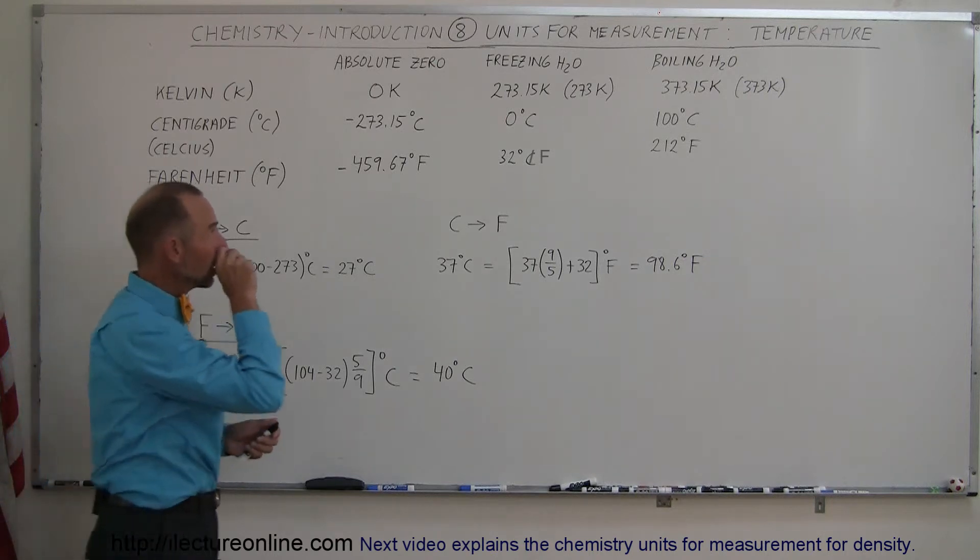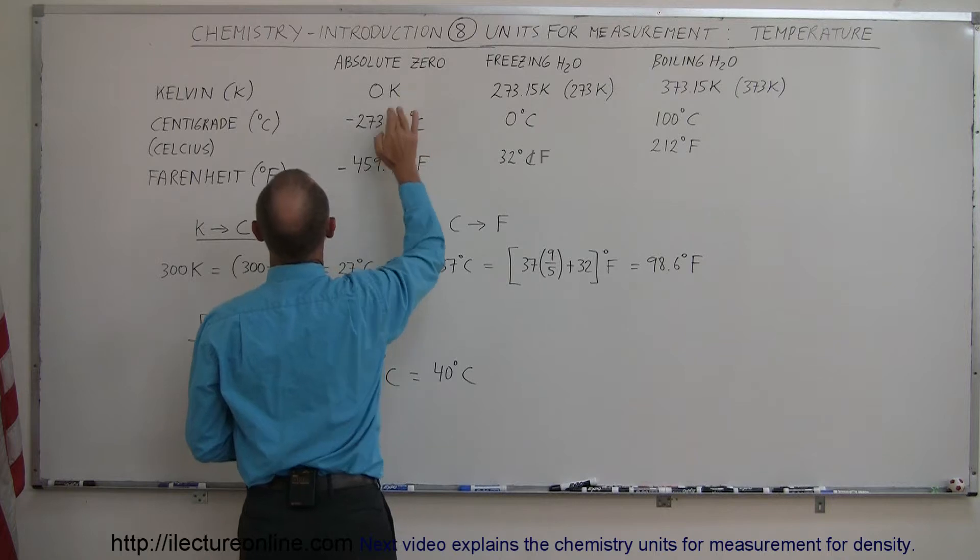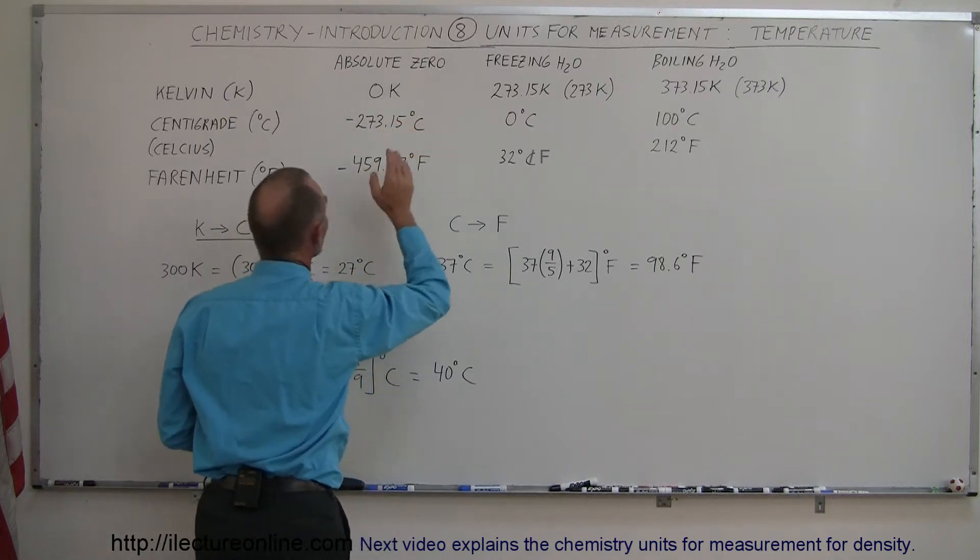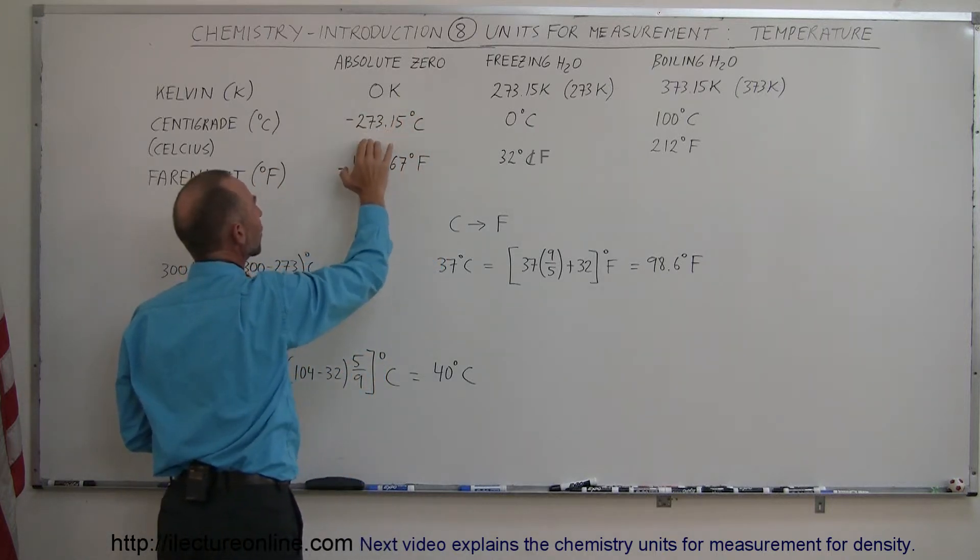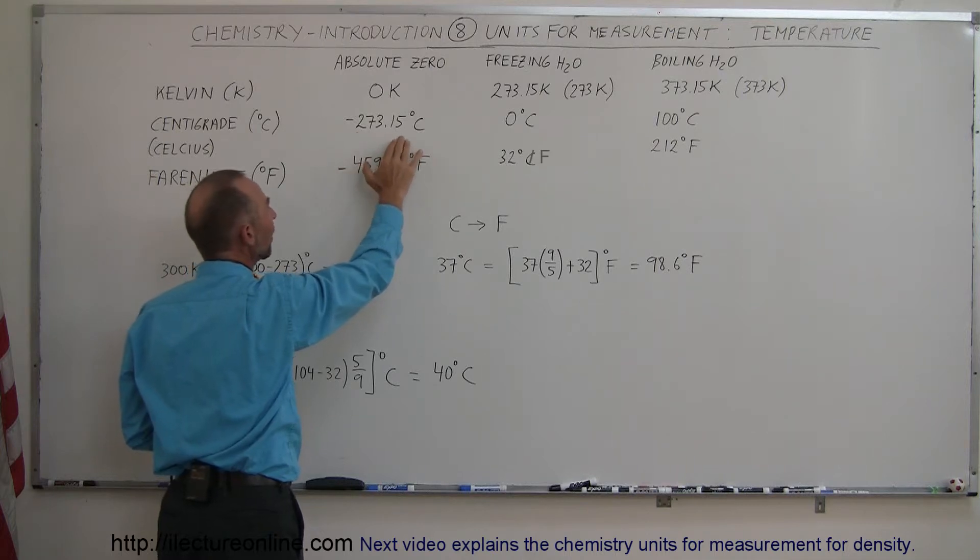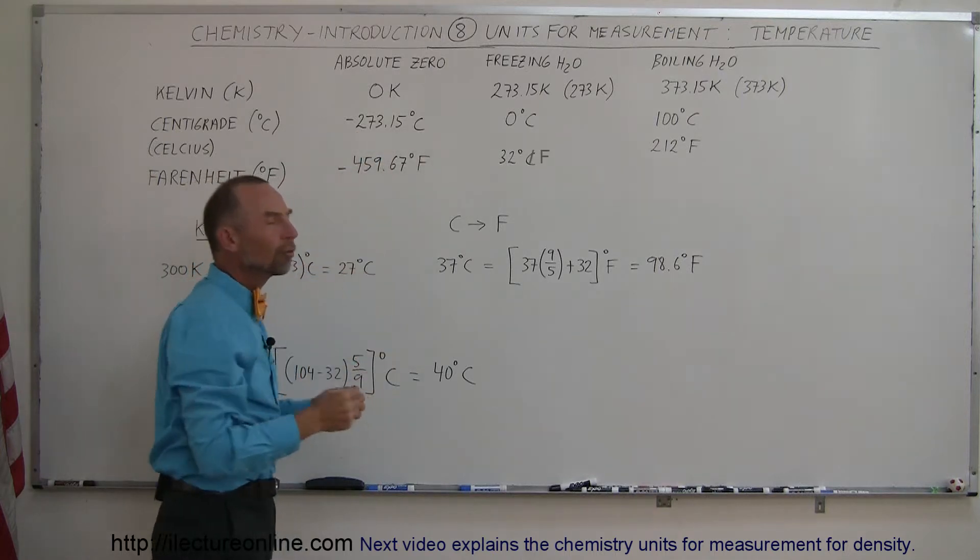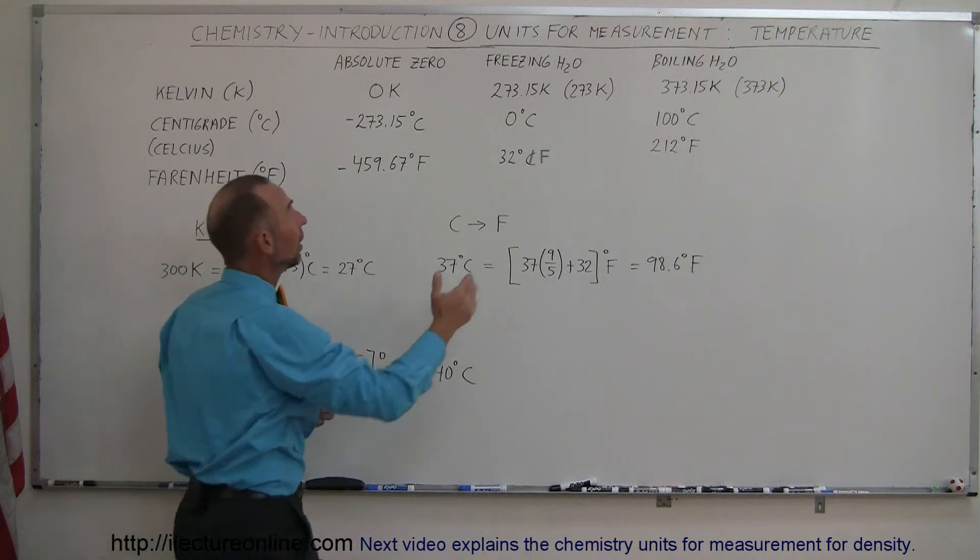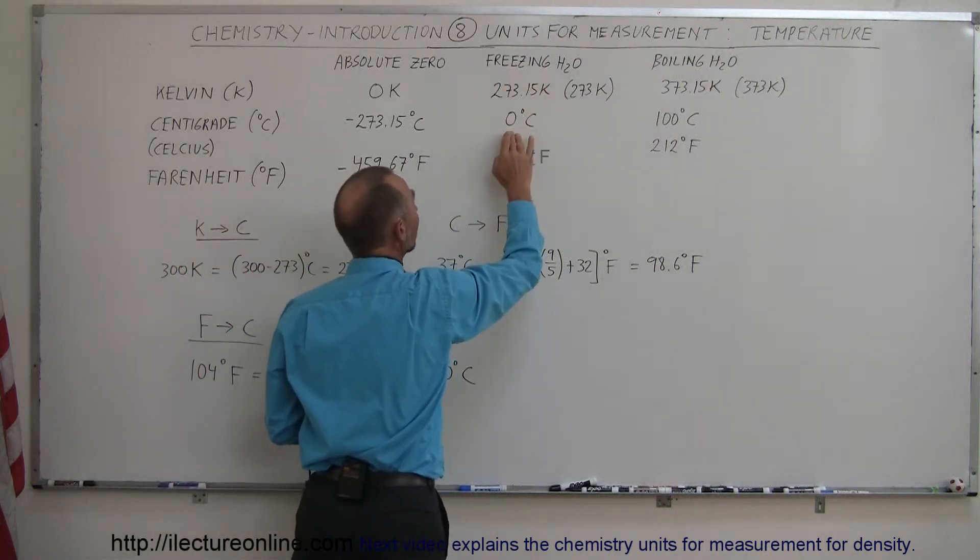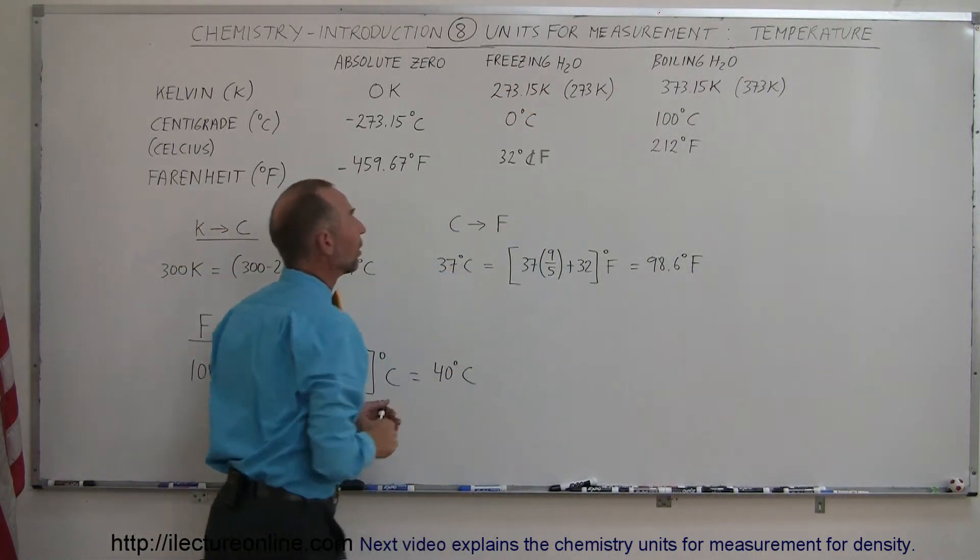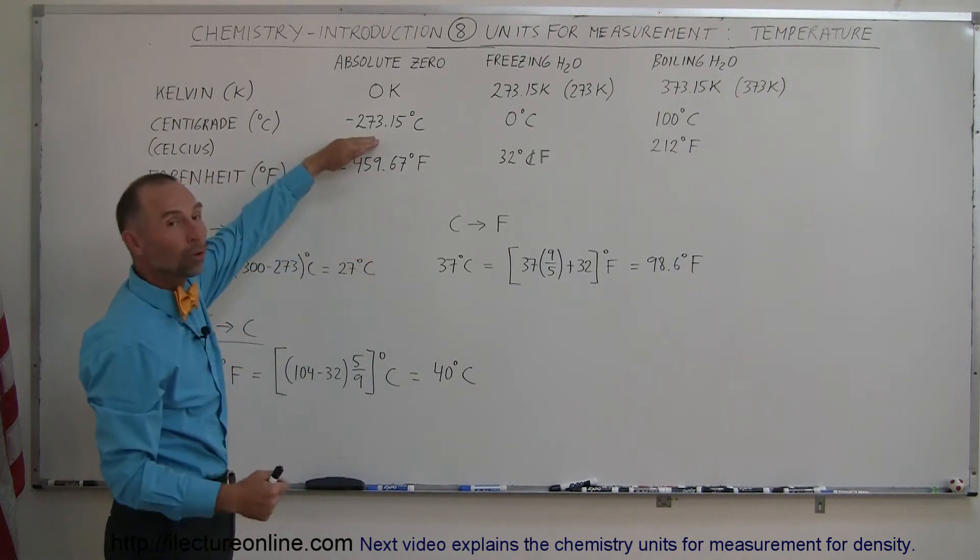Therefore, we can compare between Kelvin and centigrade degrees, because we can then say that the coldest it can ever be in centigrade degrees is 273.15 degrees below zero, below the freezing point of water, because the freezing point of water in the centigrade scale is zero degrees centigrade. So, make it 273.15 degrees colder.